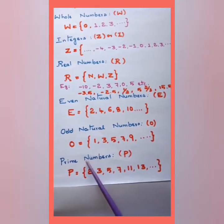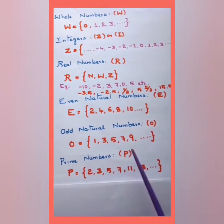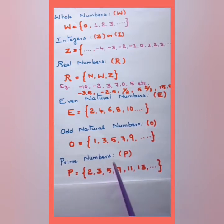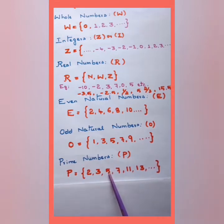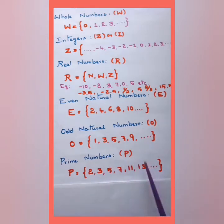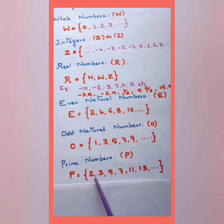Now we move to one of the important numbers used in calculations — prime numbers. Prime numbers are those numbers which are greater than 1 and are divisible only by 1 and the number itself. We don't consider 1 as a prime number because prime numbers must be greater than 1, so we start from 2.